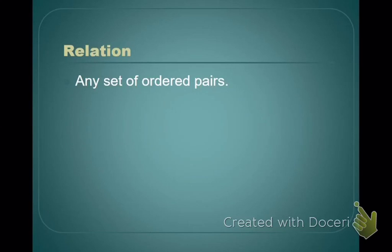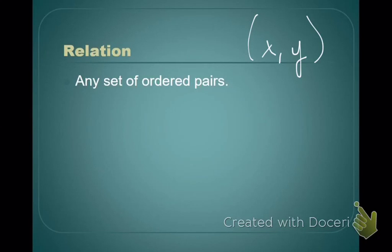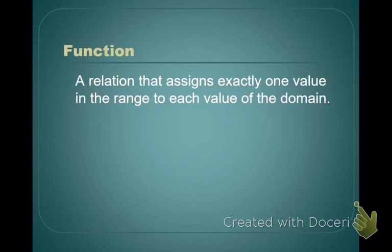Some definitions first, and then we'll come back and talk in more detail. A relation is any set of ordered pairs. Remember that an ordered pair is just what we use to plot points — that x comma y — and this tells us that x is related to y in some shape, form, or fashion. Now, if that relation assigns exactly one value in the range to each value of the domain, then it's a function.